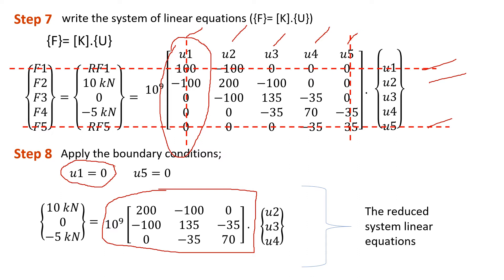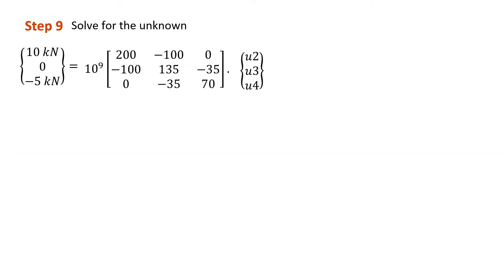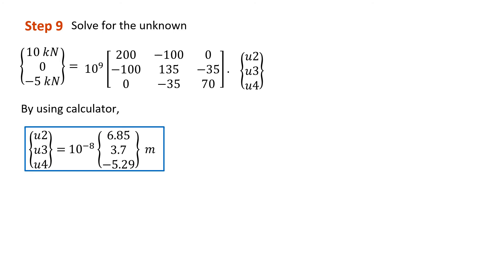Once we have the reduced system linear equation, the next step is to solve for the unknowns. You can use Gaussian elimination, or you can use a calculator in equation mode with three unknowns. Using the calculator, I obtain the answers as shown in the slide.